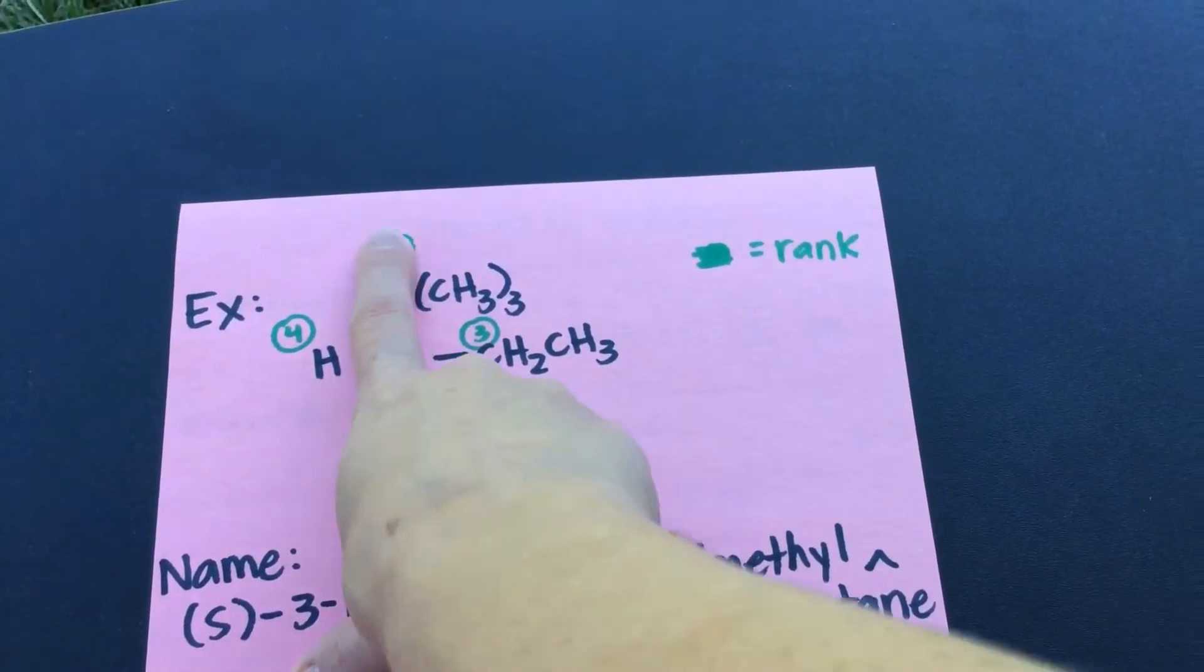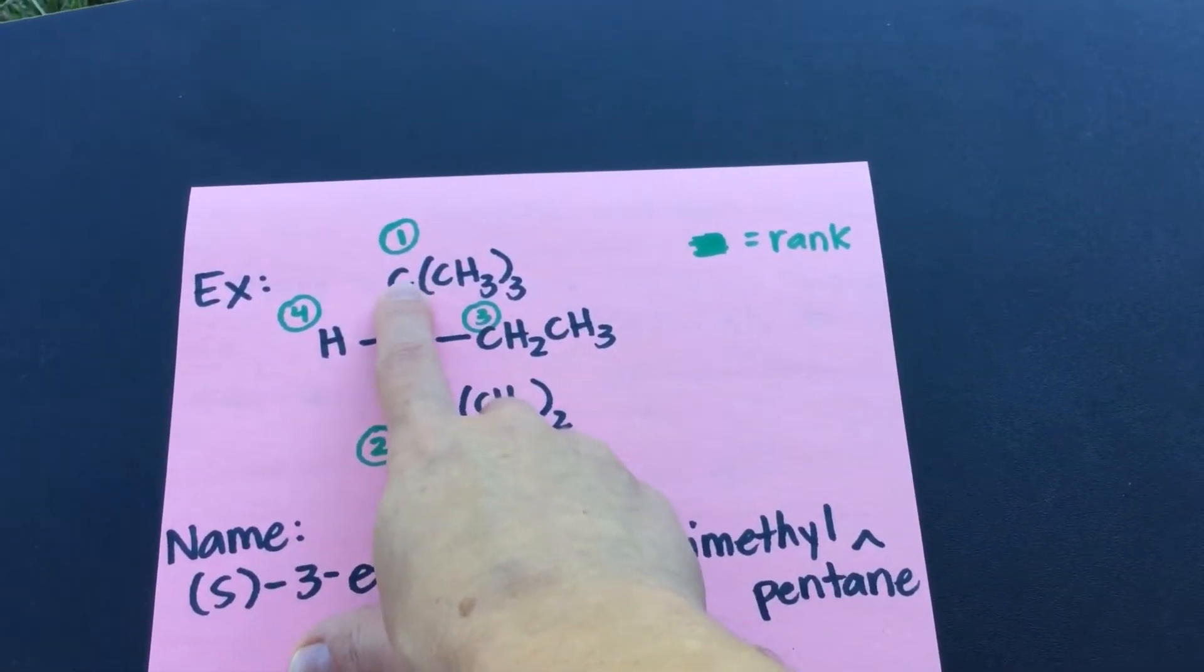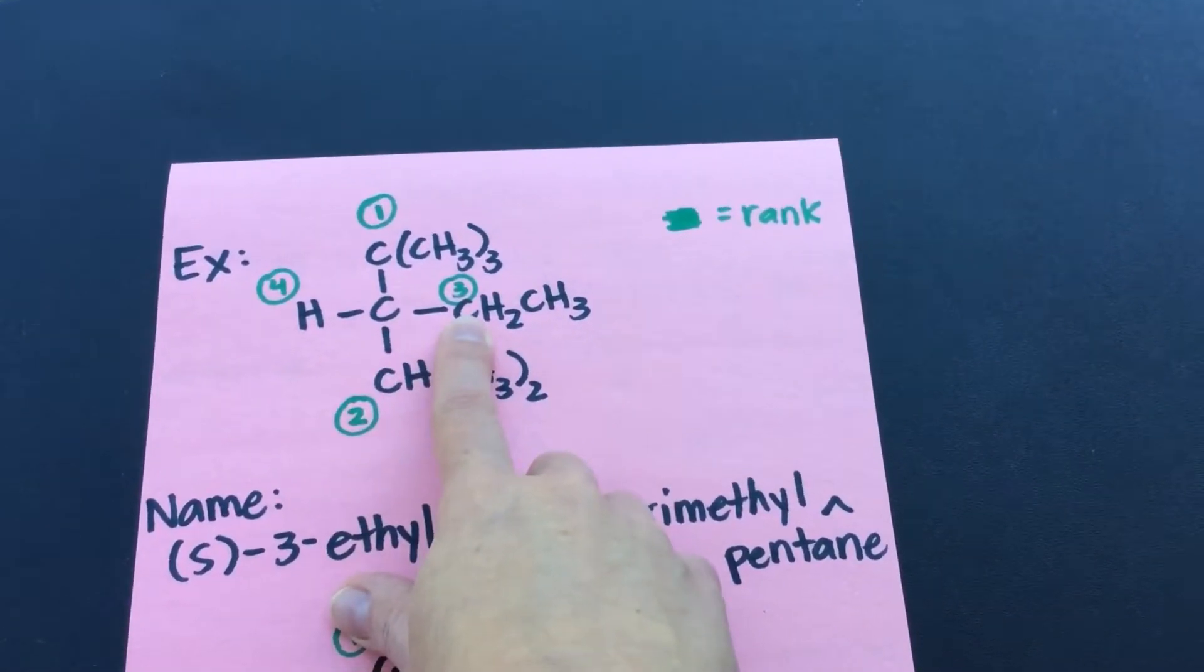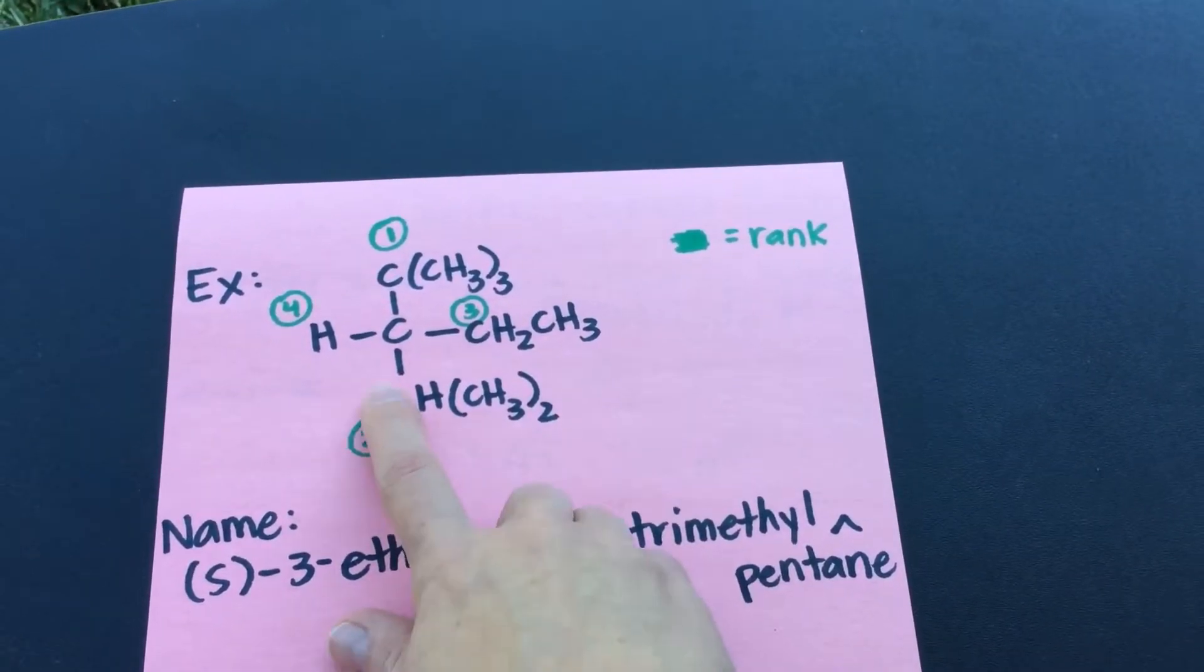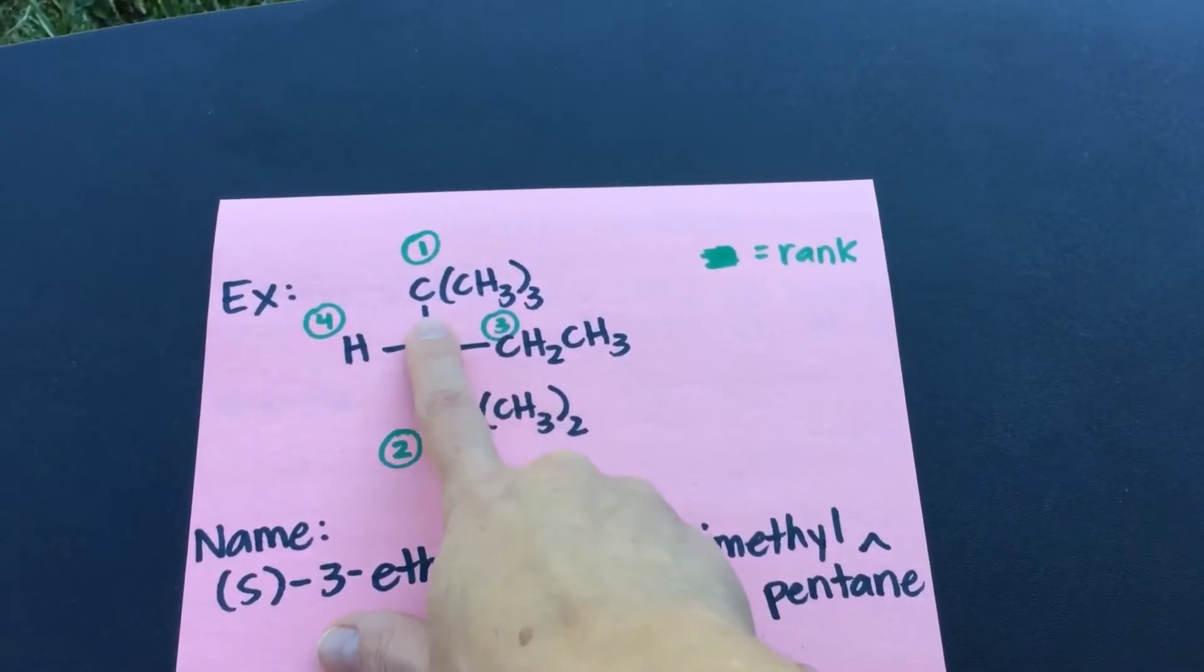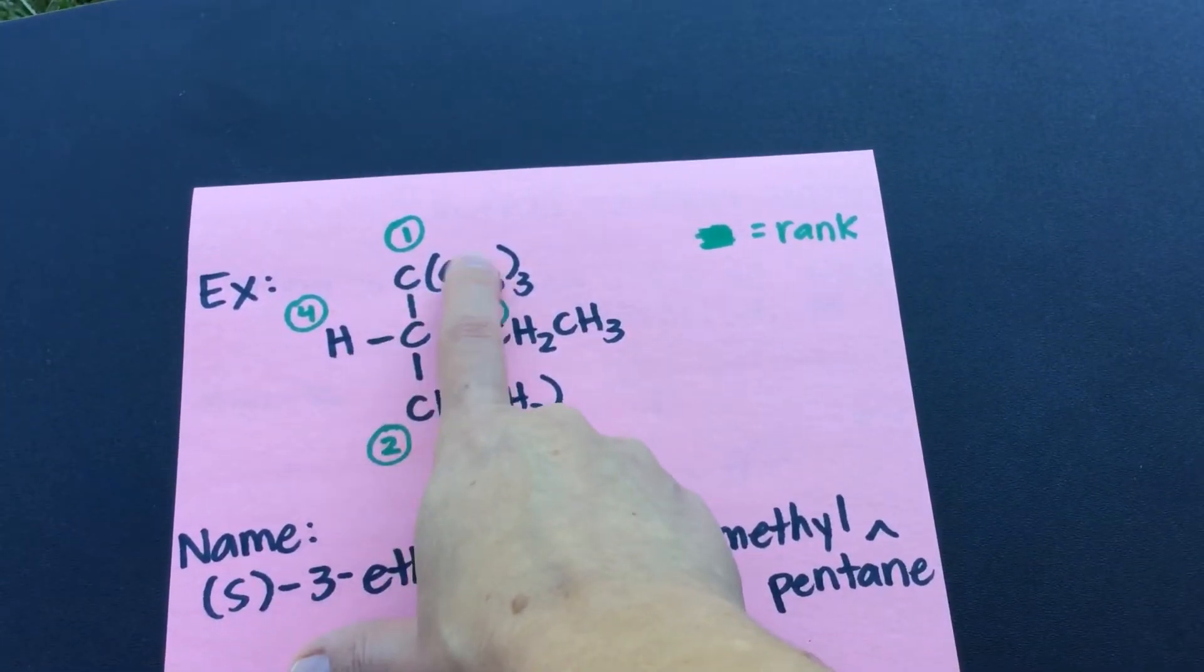This carbon is attached to three methyl groups, right: a methyl group, a methyl group, a methyl group. You can think of it that way, right?